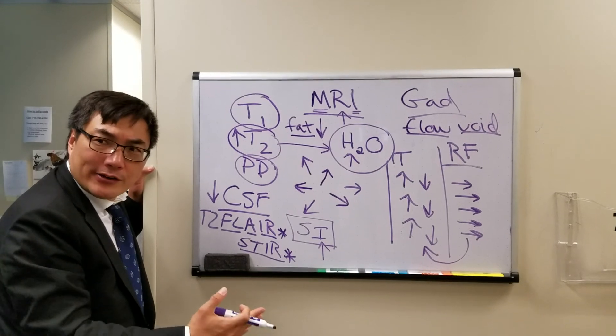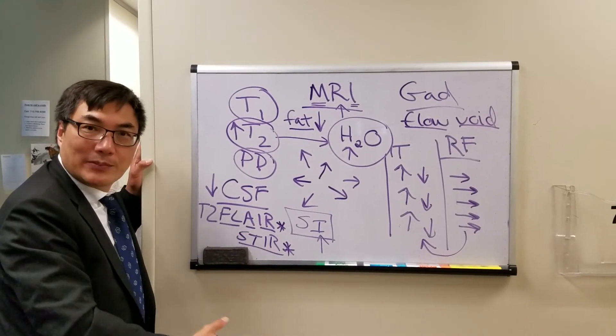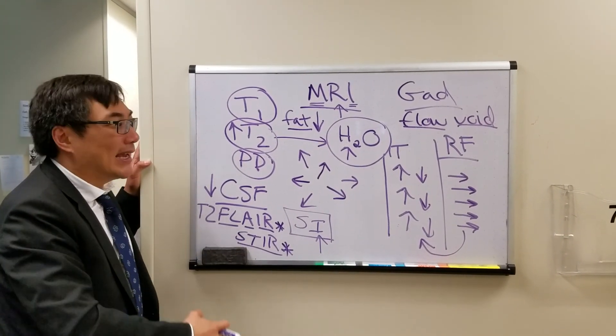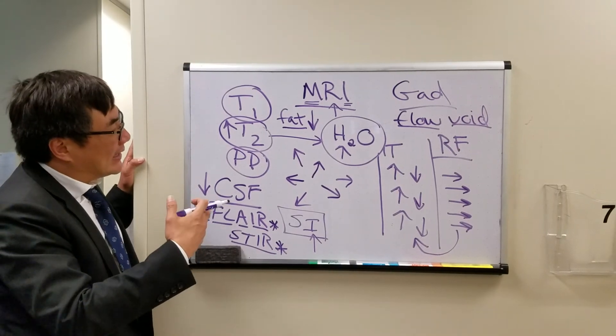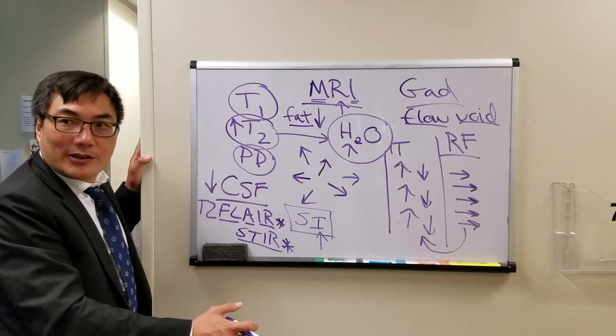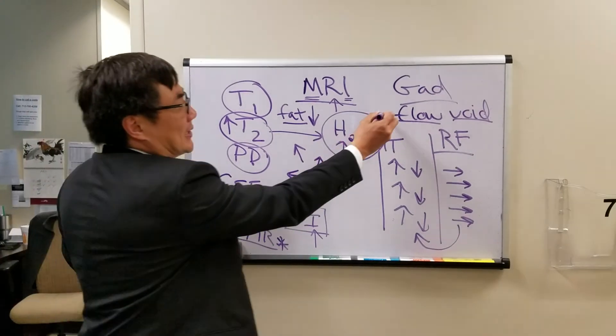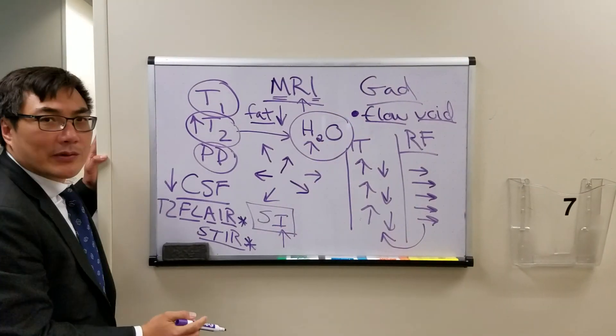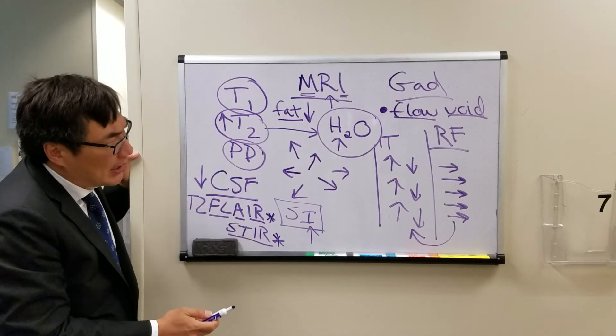So a void in the signal created by rapidly flowing blood means that high flow arterial blood, for example, in the internal carotid artery, is going to be dark on all sequences. It will be hypo-intense, dark on T1 and on T2. And after gadolinium, before gadolinium, it will all be dark. And that flow void is how we can tell that we are dealing with arterial high flow blood.